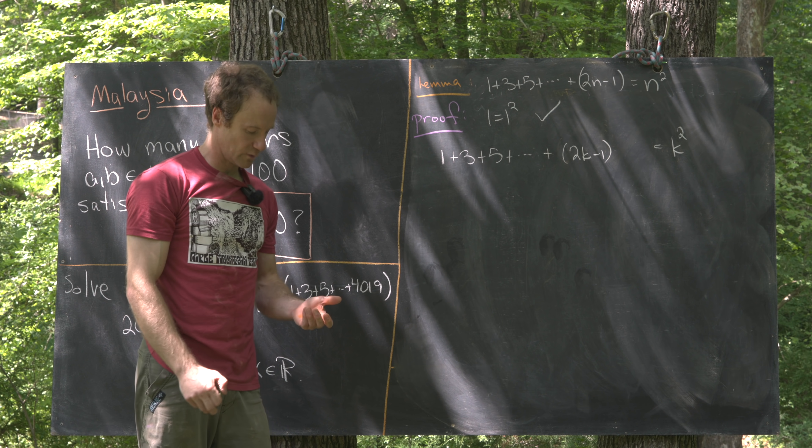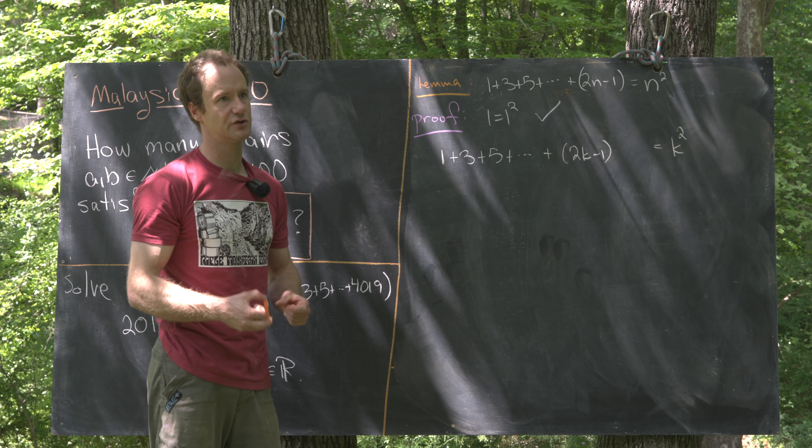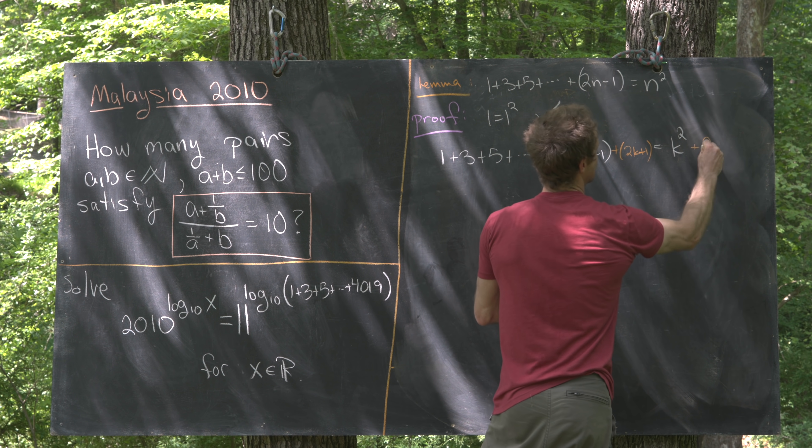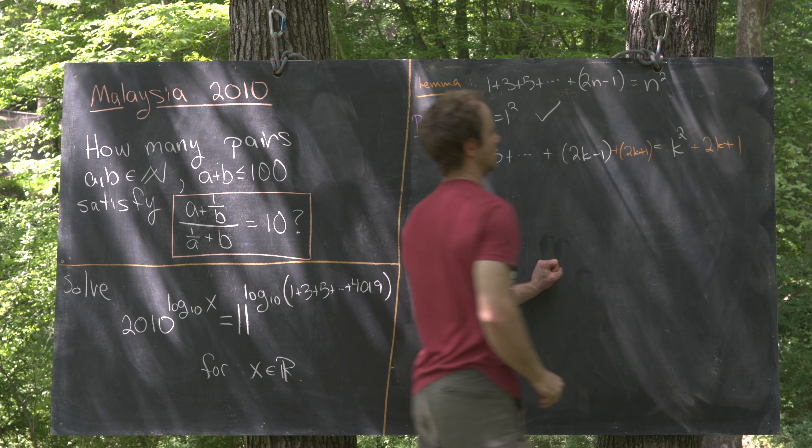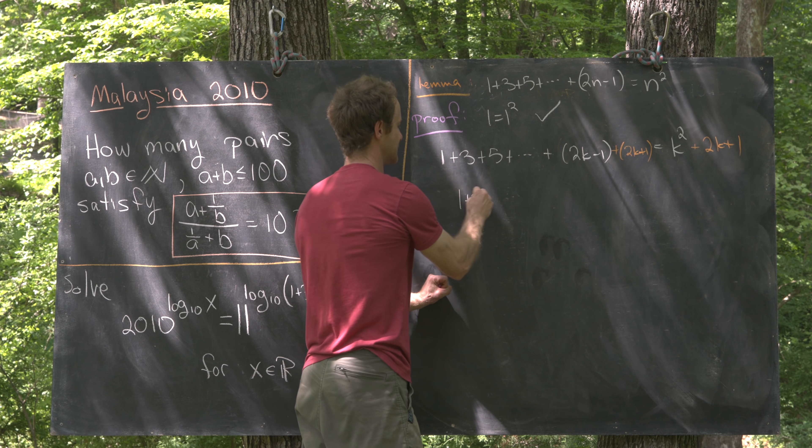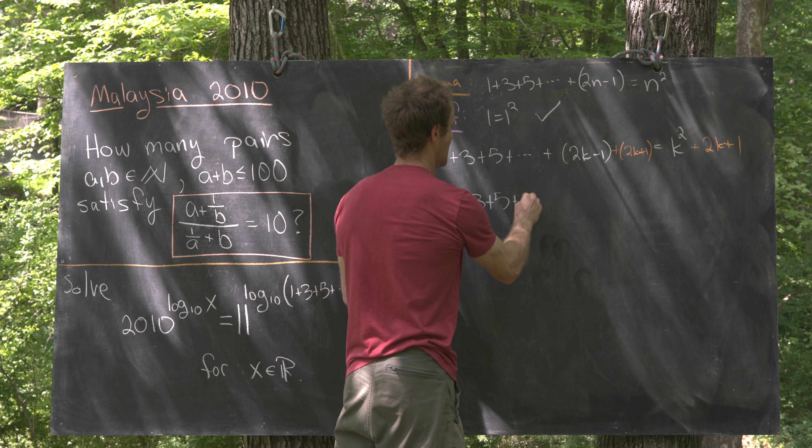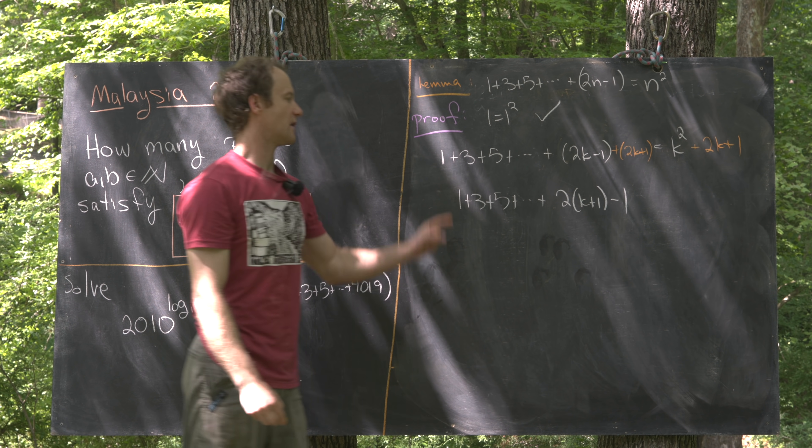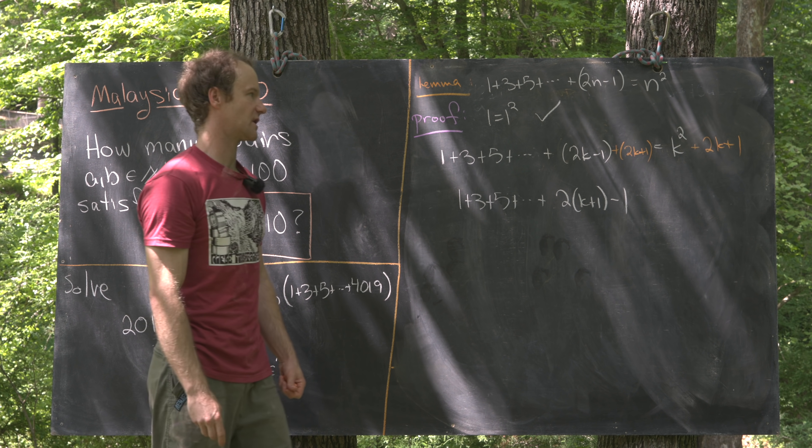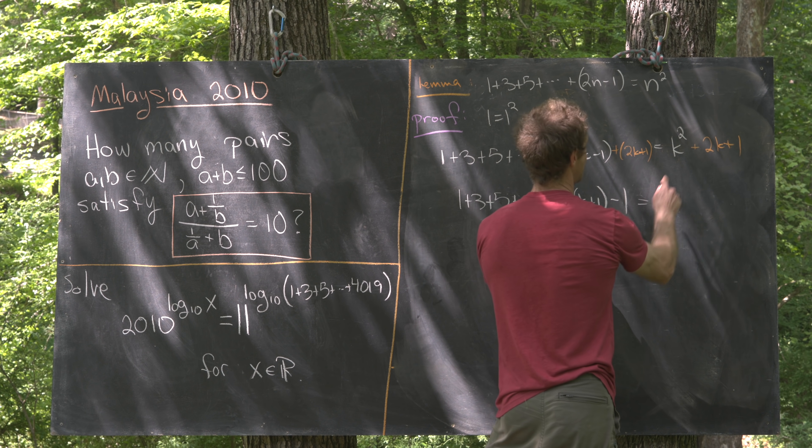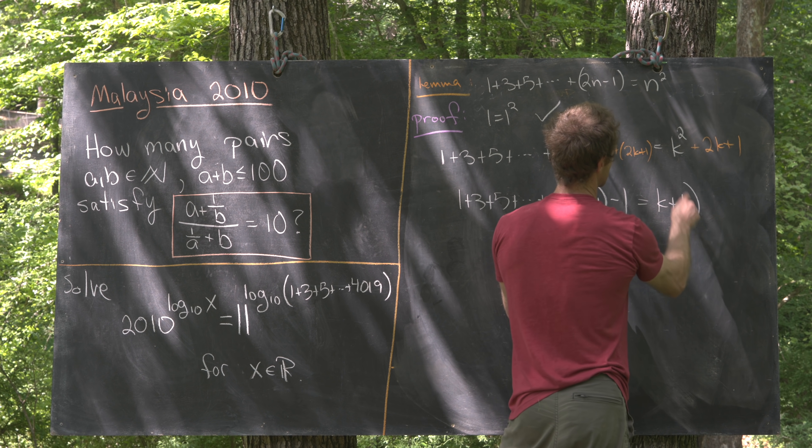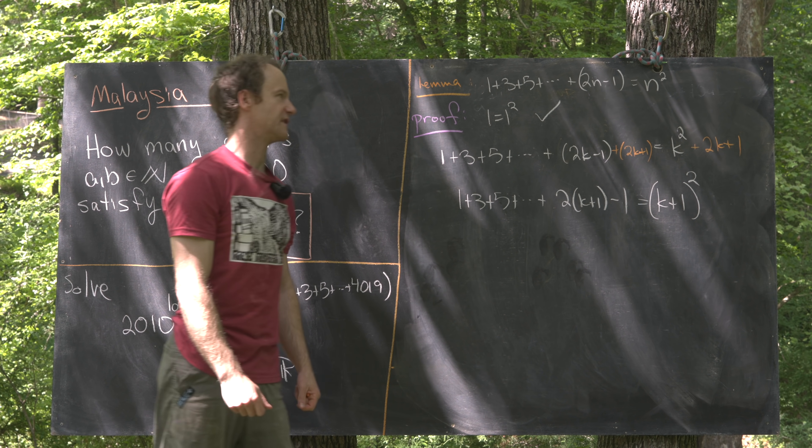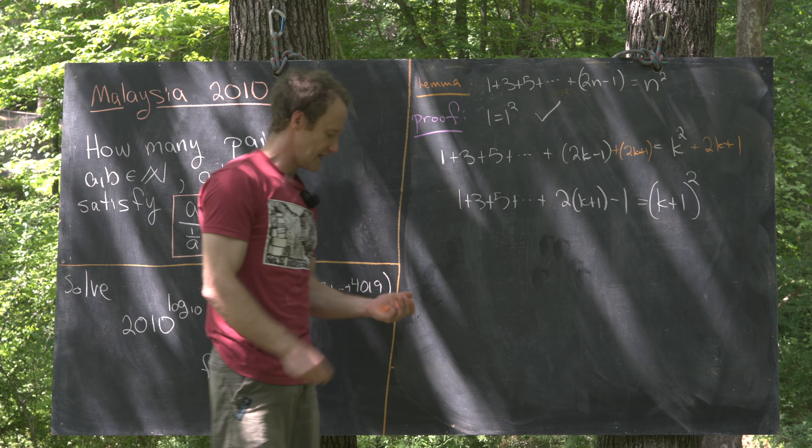Then in our induction step, we'll take this equation, which we have assumed to be true, and then add the next odd number to both sides. So that's going to be plus 2k plus 1. But now we can rewrite this left-hand side as 1 plus 3 plus 5 all the way up to 2 times k plus 1 minus 1. So I've written that so we can really see it's the k plus first odd number. And now I can factor this right-hand side as k plus 1 quantity squared. But that's exactly what we need in order to show that this is true via induction.